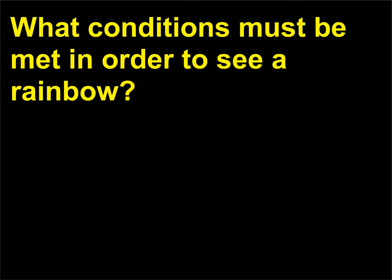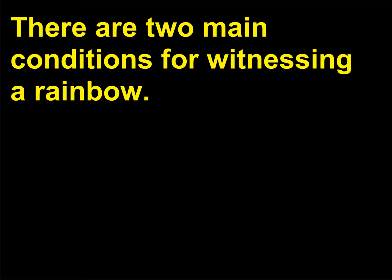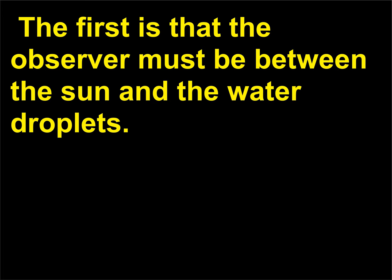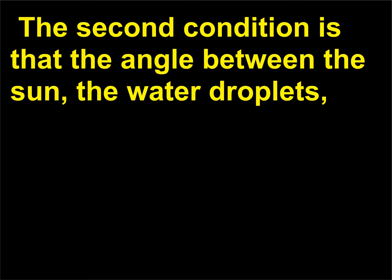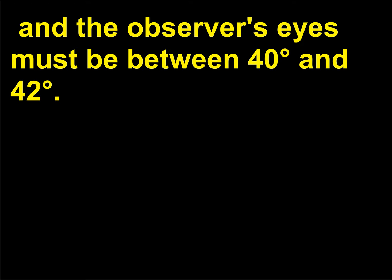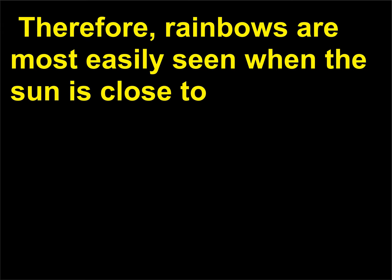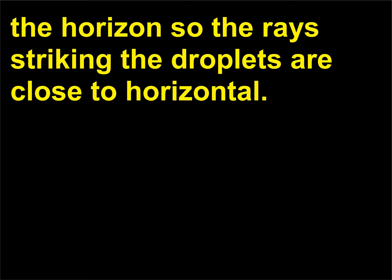What conditions must be met in order to see a rainbow? There are two main conditions for witnessing a rainbow. The first is that the observer must be between the sun and the water droplets — the water droplets can either be rain, mist from a waterfall, or the spray of a garden hose. The second condition is that the angle between the sun, the water droplets, and the observer's eyes must be between 40 and 42 degrees. Therefore, rainbows are most easily seen when the sun is close to the horizon so the rays striking the droplets are close to horizontal.